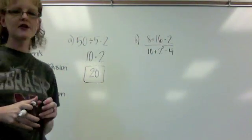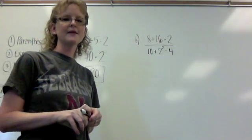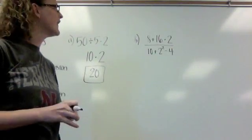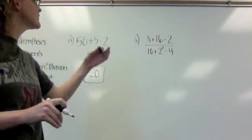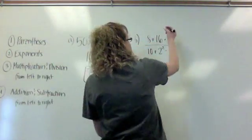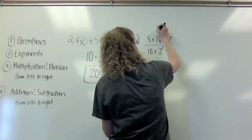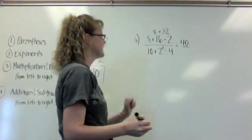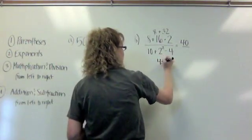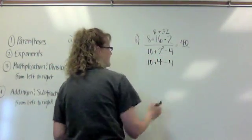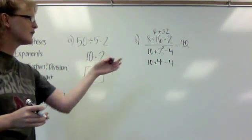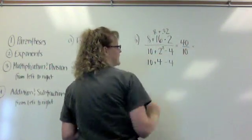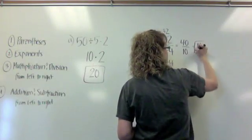In example B, we have a fraction bar. A reminder that a fraction bar acts like parentheses, which means I need to evaluate the numerator and then evaluate the denominator, and finally divide the numerator by the denominator. So if I look in the numerator, I should take 16 times 2 first, then add the 8, which gives me 40 in the numerator. In the denominator, I do my exponent first. 2 to the second is 4. And then I can go left to right. I have 10 plus 4 and then minus 4, which obviously would leave us with 10. My last step is to take the 40 divided by 10, which gives me an answer of 4.